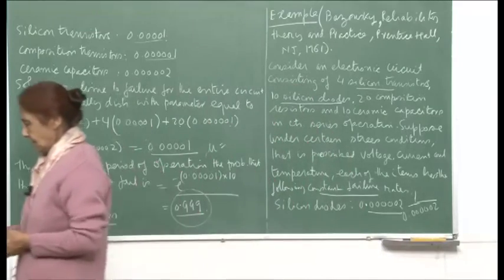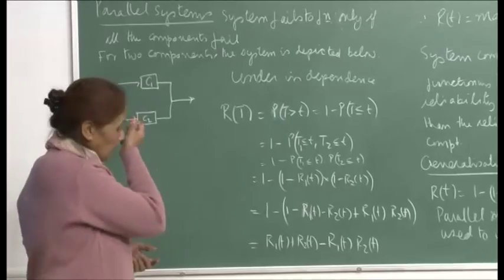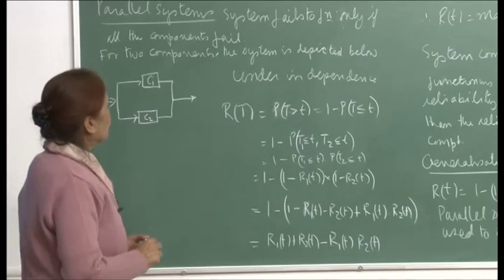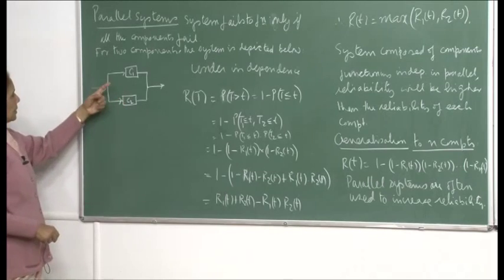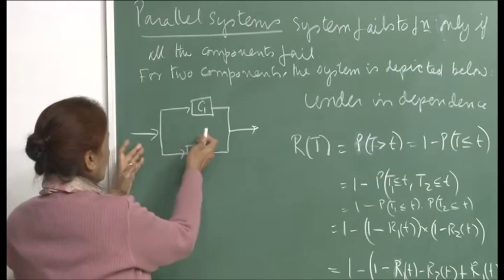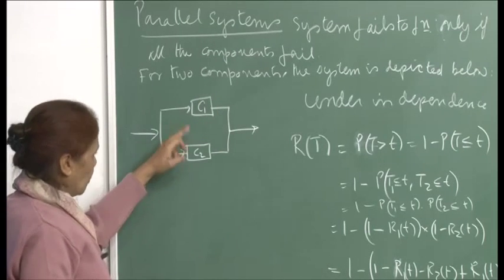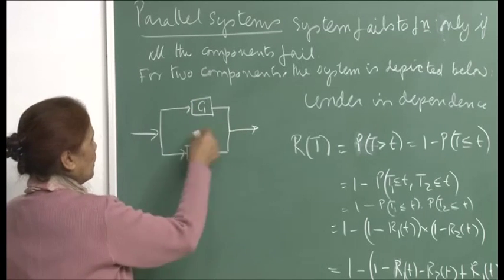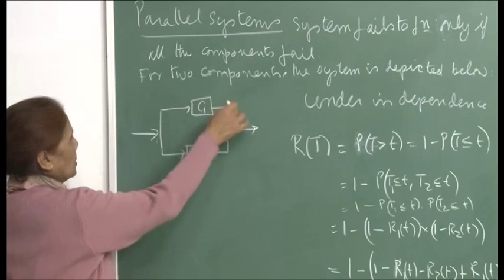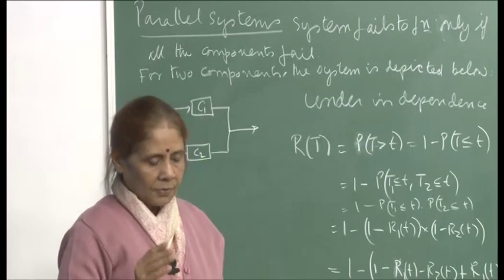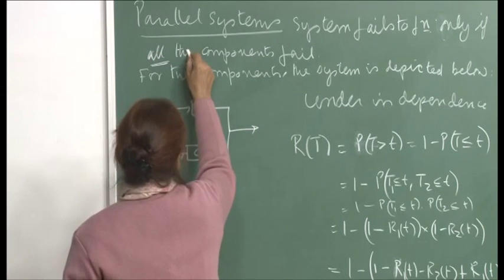Now the other system to consider is a parallel system. Here the system fails to function only if all the components fail. Diagrammatically, for 2 components arranged in parallel, the input comes and can go either way. The system will fail to function only if both of them fail, because as long as one is functioning, the operation can still be performed through the working component.